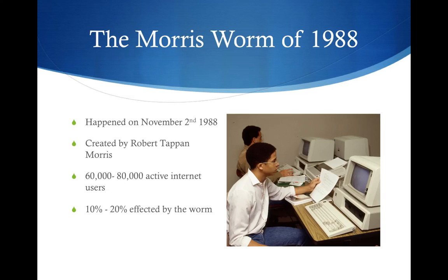Computers were still young and not as common as they are today. When the Morris Worm attack happened, it disabled around 10 to 20% of the user base at the time. But compared to today, if there was a worm of similar scale released today, unchecked and unchallenged, it would affect somewhere around 5 million users.